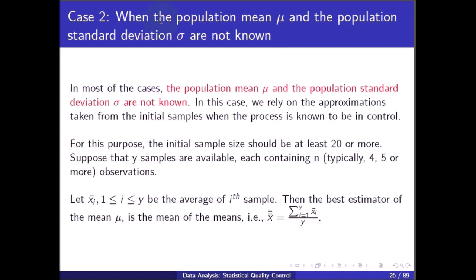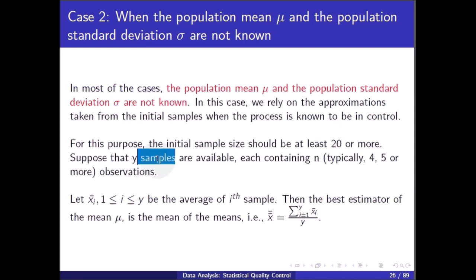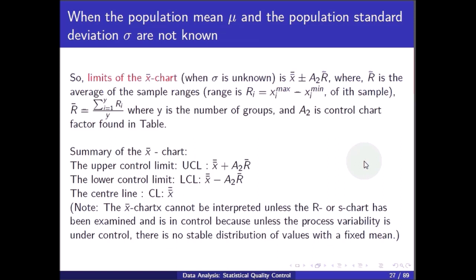Case 2: when the population mean mu and population standard deviation sigma are not known. In this case we rely on approximations from initial samples when the process is known to be in control. The initial sample size should be at least 20 or more. Suppose y samples are available, each containing n (typically 4, 5, or more) observations. Let x_i-bar (i = 1 to y) be the average of the i-th sample. The best estimator of mu is x-double-bar = (sum of x_i-bar from i=1 to y) / y.